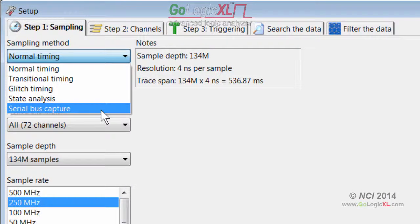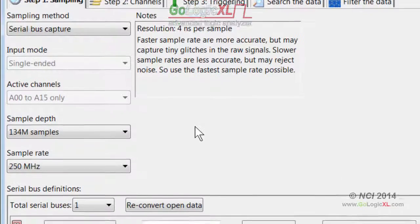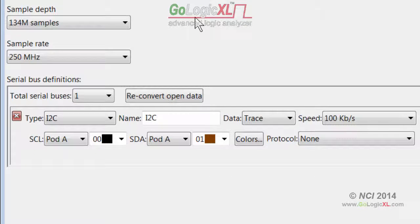Serial bus capture mode is identical to transitional timing except that special serial bus triggering hardware was added. Use this capture mode any time you must trigger on serial bus values. The serial bus definition area is enabled when serial bus capture mode is active. Defining serial buses and triggering on serial bus data is discussed in later videos.